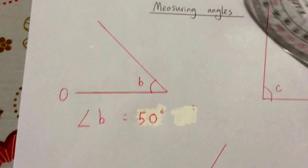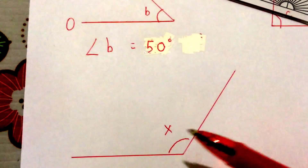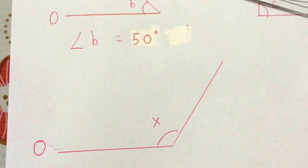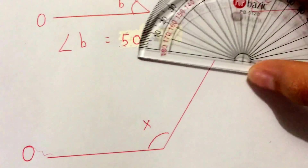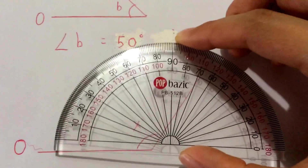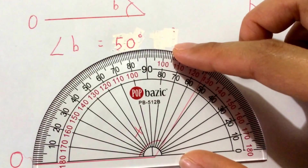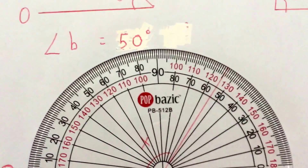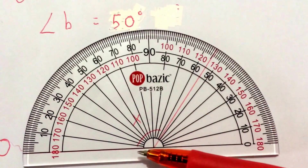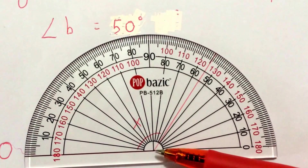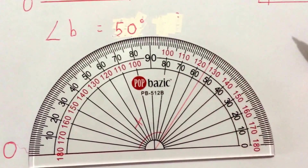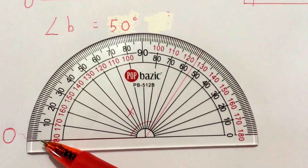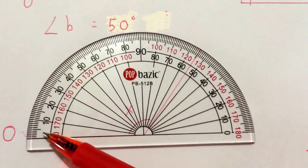Now let's look at another example of using the outer scale. This is my angle, and I want to measure angle X. Again, I put 0 here. And I place my protractor. When I place my protractor on my angle, I must make sure that this black line is touching the red line, and the points must meet exactly. So now my protractor is placed correctly — the black line on the line of the angle and the meeting point here. Where do I start? On the left, because 0 is here. If 0 is here, I use the outer scale, because on the outer scale, 0 starts from here.